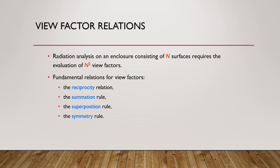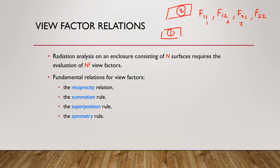We want to find how many view factors exist for our problems using the n-squared relation. If you have two different surfaces — surface one and surface two — you square the number of surfaces: two squared equals four. So we have four different view factors: F1-to-1, F1-to-2, F2-to-1, and F2-to-2.